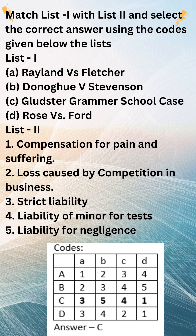The contractors found disused mines when digging but failed to seal them properly. They filled the reservoir with water. As a result, water flooded through the mineshafts into the plaintiff's mines on the adjoining property. The plaintiff, Fletcher, sued Rylands for damages. Rylands argued that he was not liable because he had not been negligent. However, the House of Lords held that Rylands was strictly liable for the damage caused by the escape of water from his reservoir.